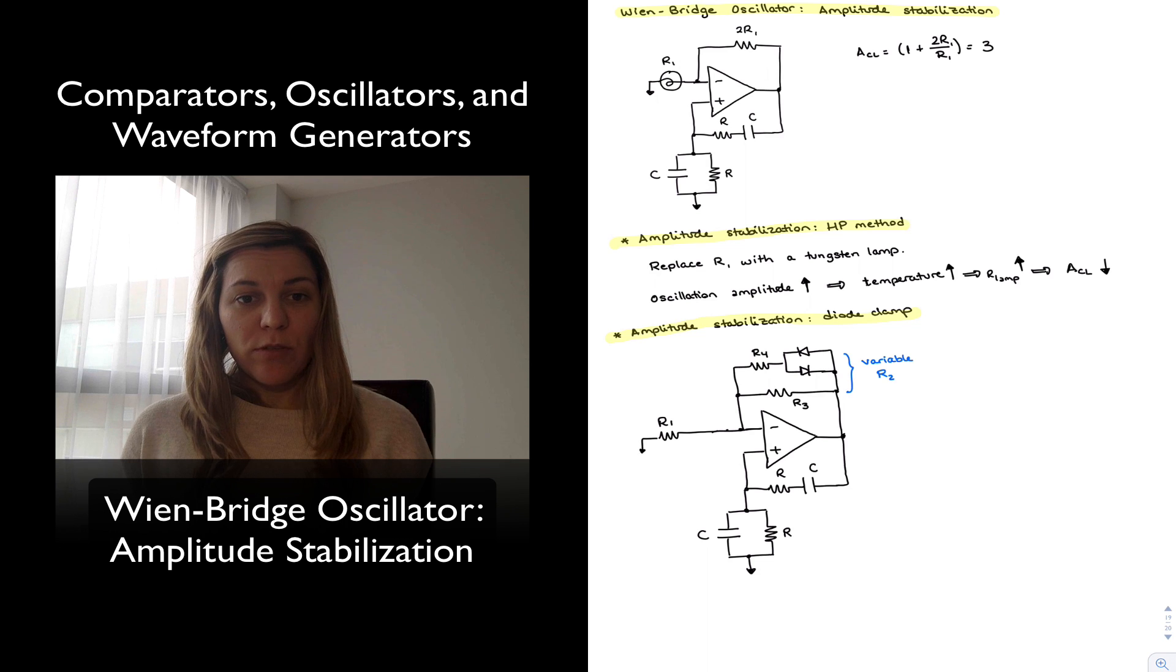Another method that we can use for amplitude stabilization is what's known as a diode clamp. And so I have drawn the circuit down at the bottom, and notice that it is the same as the original circuit, except I have now replaced the feedback resistor R2, or what I had originally labeled 2 times R1. I have replaced it by a combination of a resistor R3 in parallel with a resistor R4,